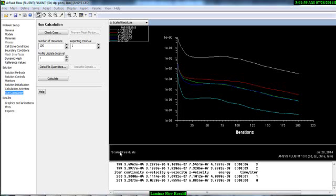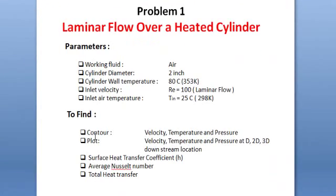Our solution is done, now we will see the results. The problem is asking for a contour of velocity, temperature, and pressure. It is also asking for a plot of velocity, temperature, and pressure at 2D and 3D downstream locations. First of all, we will see the velocity, temperature, and pressure contours.